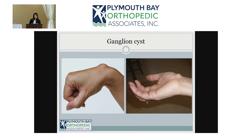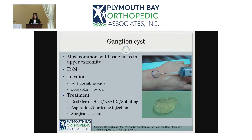Ganglion cysts can happen either on the back side of the wrist or on the volar side. Most commonly it happens in women more than men, and more commonly on the back side of the wrist. These cysts are accentuated with wrist hyperflexion — you can see the mass more readily. On the volar side it happens more towards the thumb.